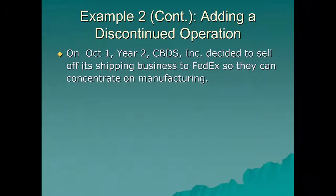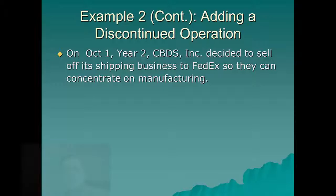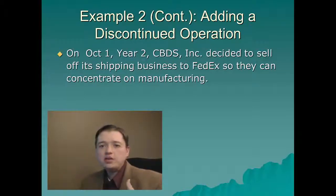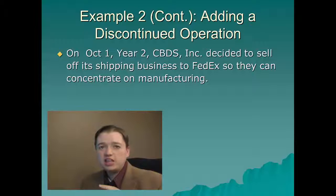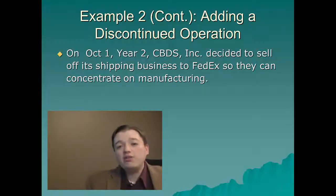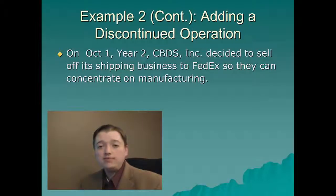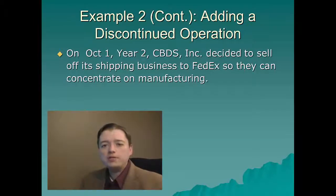In order to count as a discontinued operation, you have to be completely getting out of a line of business. You can't just be tweaking it or changing it. You can't be dropping one subsidiary that does that particular business but still have three others. You can't be switching countries. You have to be completely getting out of that line of business. If you're still in that line at all, it doesn't count as a discontinued operation. We need to be really careful to first decide: is this really a discontinued operation? Let's run through some examples to solidify this idea.